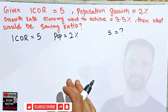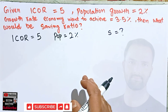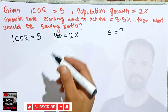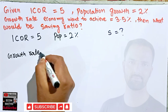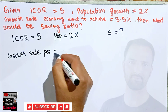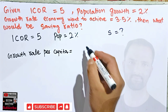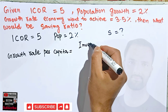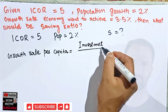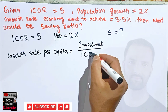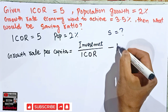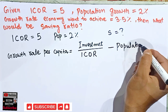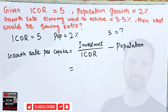Now, what is the relationship between growth rate and saving ratio in an economy? This is given by Harrod-Domar. The growth rate per capita is equal to the investment ratio divided by the incremental capital output ratio, minus population growth.